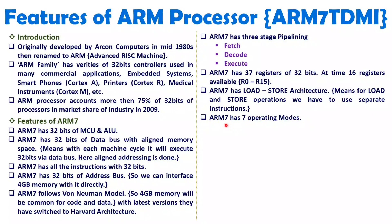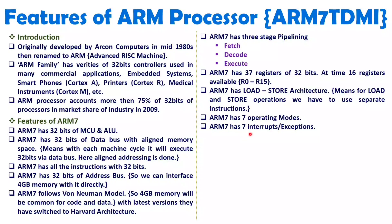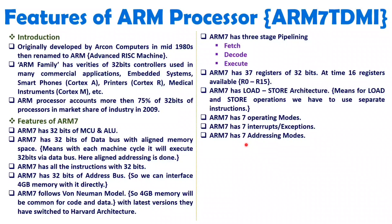ARM7 has 7 operating modes, 7 interrupts (also referred to as exceptions), and 7 addressing modes. I will be making separate videos for operating modes, addressing modes, and interrupts. For now, just understand it is having 7 operating modes, 7 interrupts, and 7 addressing modes.